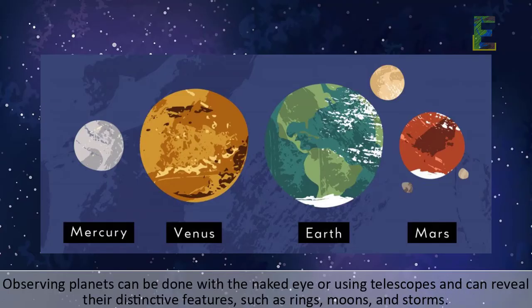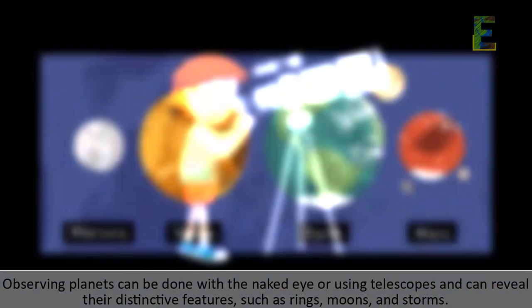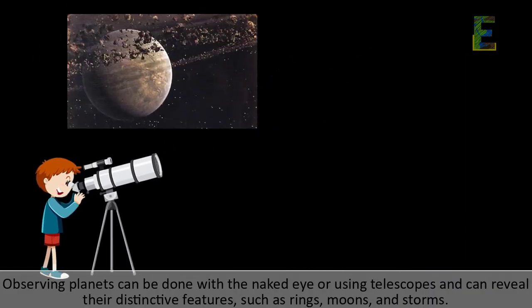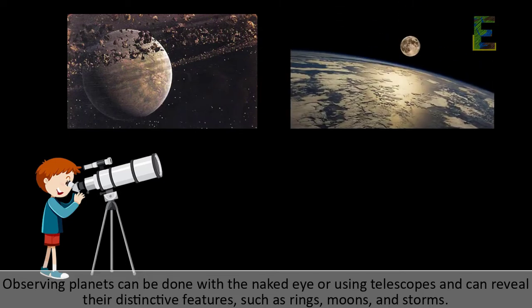Observing planets can be done with the naked eye or using telescopes and can reveal their distinctive features, such as rings, moons, and storms.